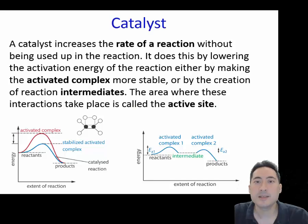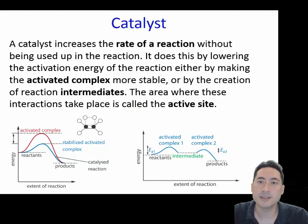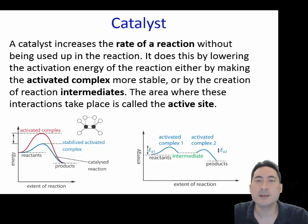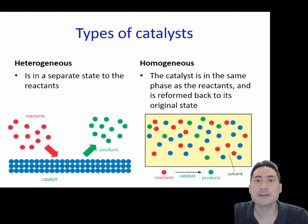As partly illustrated with the metal ring puzzles, catalysts work by allowing the activated complex to form more easily. A more complex action of catalysts is in the form of intermediates, which would be the equivalent of a two-part metal ring puzzle.